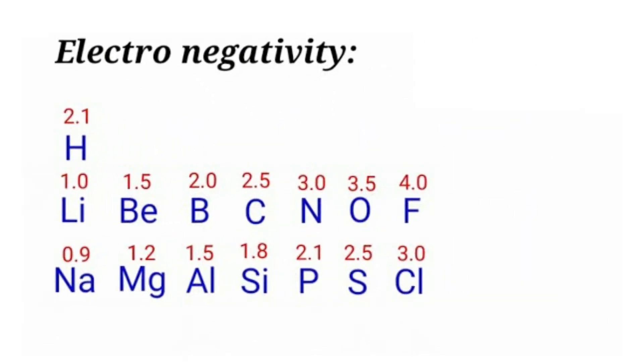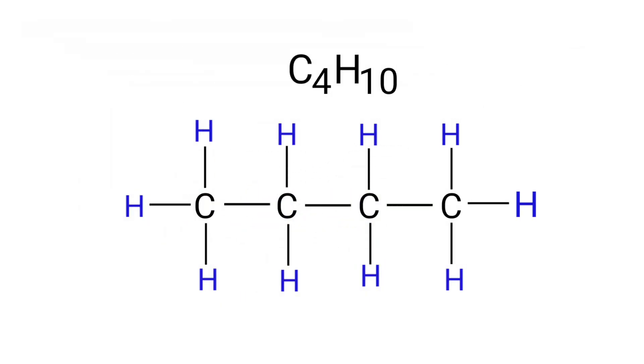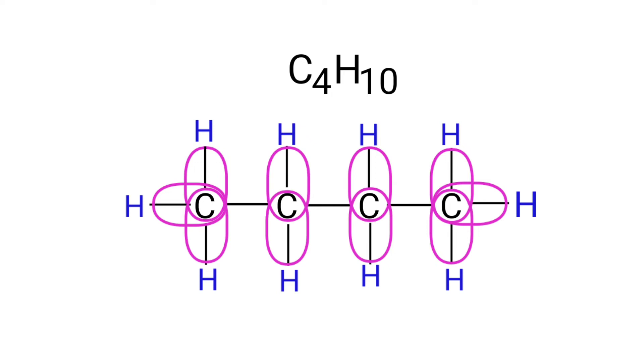As per the electronegativity chart, carbon has more electronegativity than hydrogen. So in between C-H bonds, the carbon atoms can take the bonds towards itself. Therefore, the oxidation number of hydrogen is plus one and the oxidation number of carbon is minus one.